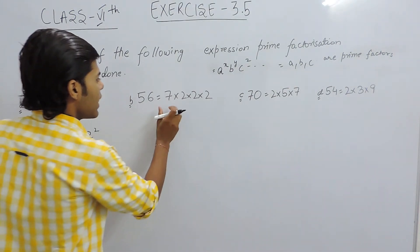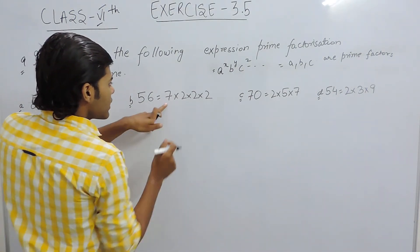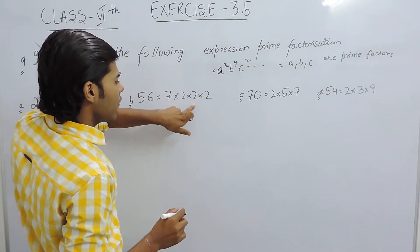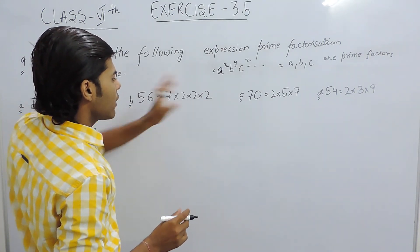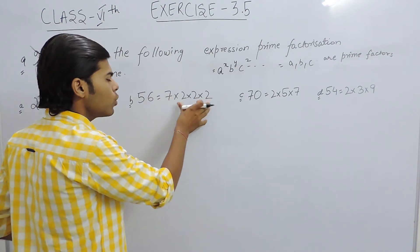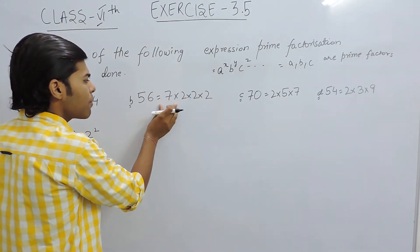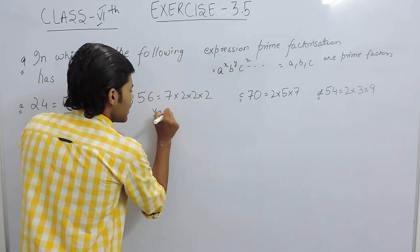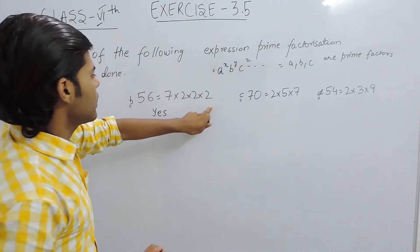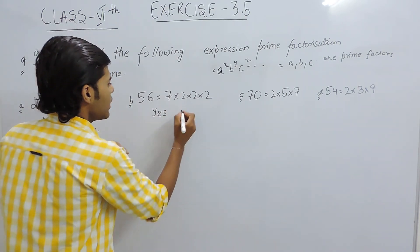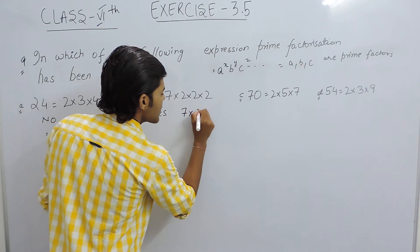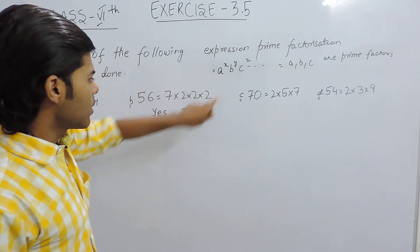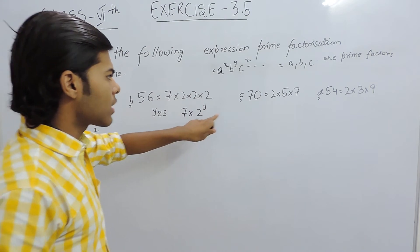Now in this one, the answer written is 7 multiplied with 2 multiplied with 2 multiplied with 2. That is, 2 is a prime factor and 7 is a prime factor. So yes, the prime factorization has been done. In other words, we can write it like 7 multiplied with 2 to the power 3, where these two are prime factors.